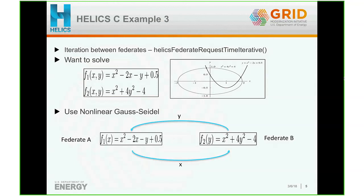What I wanted to check was how many iterations it took to solve both equations together in one federate versus solving them separately on two federates. For this very simple example, solving them together would be much faster than doing Gauss-Seidel, because Gauss-Seidel is inherently slower than doing a full Newton on the entire set of equations. However, if it's very difficult to write the Jacobian for the full system, then splitting them and solving separately — where Gauss-Seidel might be preferred — makes sense.